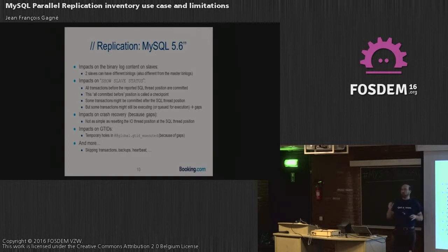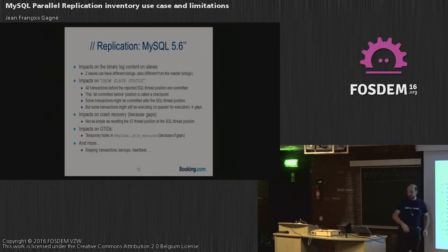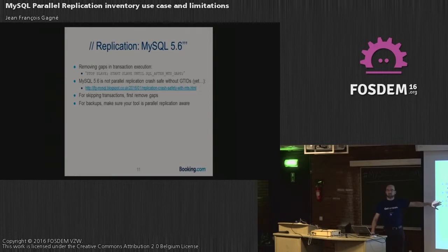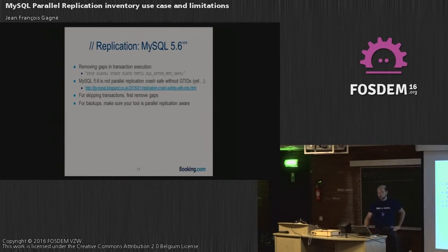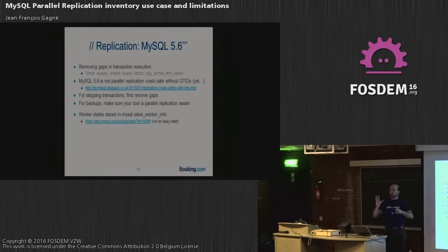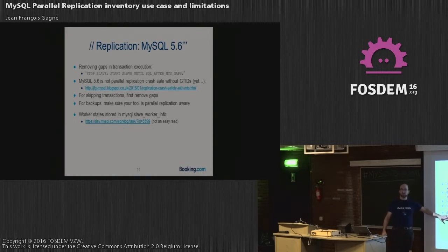Backups and heartbeat — if you're using heartbeat to know your slave delay and you have the heartbeat in one schema, you don't know about the others, so you need heartbeat in every schema you're replicating. For MySQL 5.6 without GTID, parallel replication may not be crash-safe. For skipping transactions: first remove gaps, then go back to single-threaded replication if you want to know which transaction you're skipping. For backups, read the documentation of your backup tool.